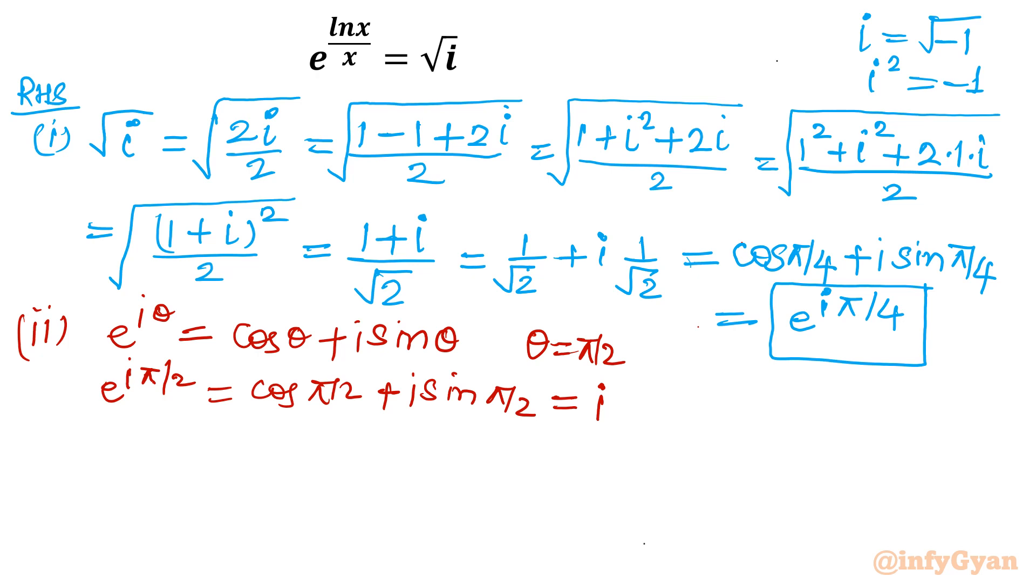As per our requirement it is square root i. So i is e raised to the power i pi by 2. So I will write square root i will become e raised to the power i pi by 2 whole power 1 by 2 or square root.